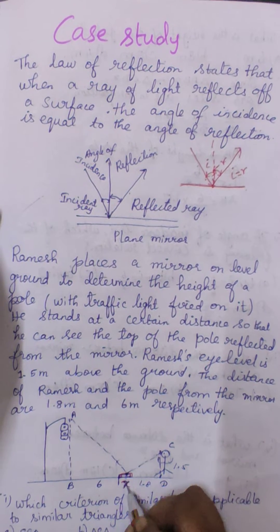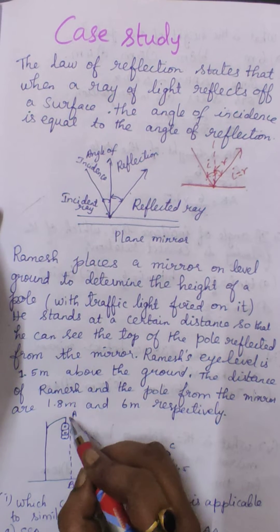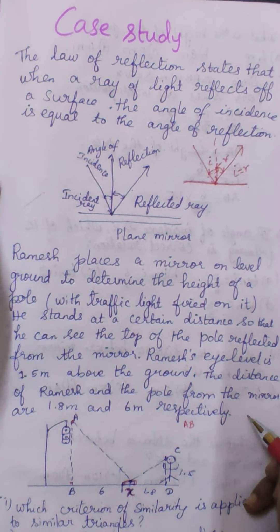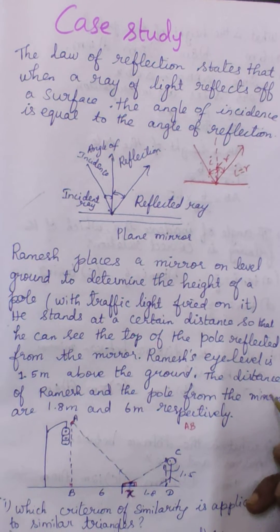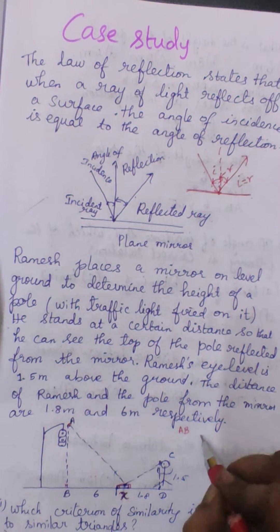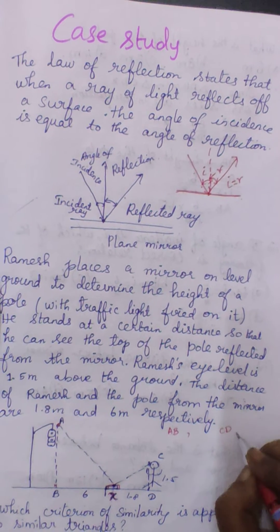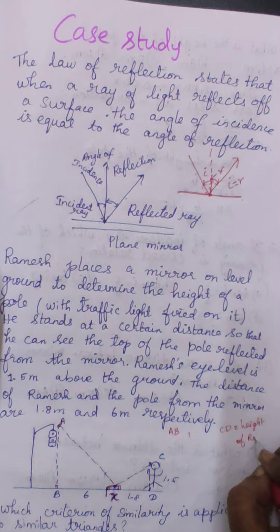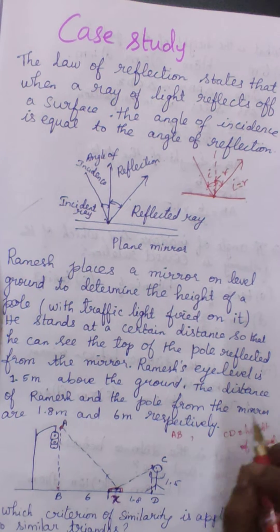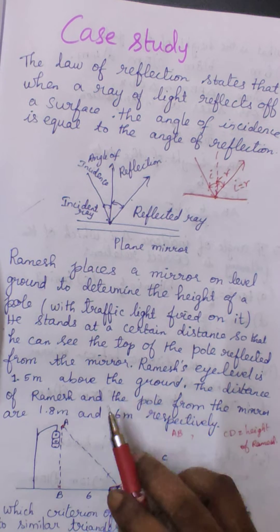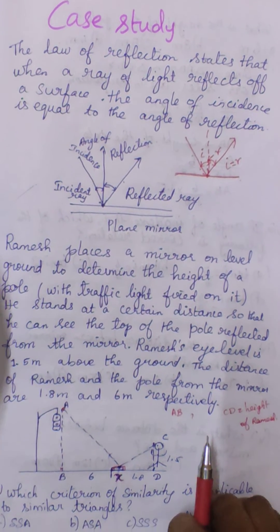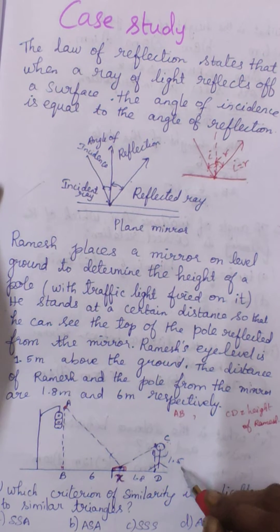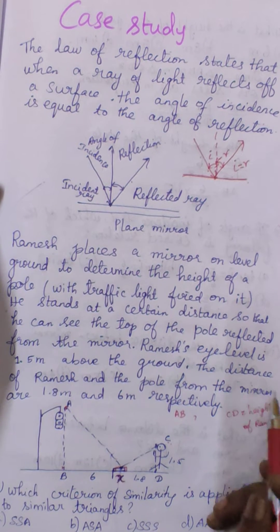Here I have labeled the mirror as X. A, B is the pole — the height of the traffic pole. And C, D is the height of Ramesh. Ramesh's eye level is 1.5 meters, which means the height of Ramesh is 1.5 meters above the ground.